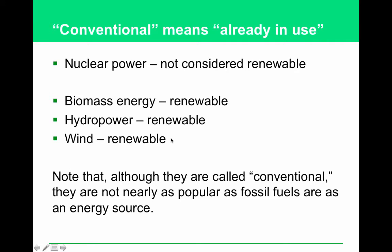A few definitions before we move on. 'Conventional' means already in use — basically referring to stuff that's already in use that is not fossil fuels. Nuclear power is a conventional source of power but it's not considered renewable. Biomass, hydropower, and wind are conventional sources of power that are renewable. Note that although they are called conventional, they're not nearly as popular as the three fossil fuels as an energy source.